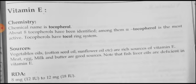Vitamin E is also called as tocopherol. Toco means child, ferrol means birth. Hence, tocopherol means childbirth. Vitamin E is helpful for fertility and also for childbirth. There are 8 tocopherols that have been identified. Among them, alpha-tocopherol is the most active form and it contains the tocopherol ring system.